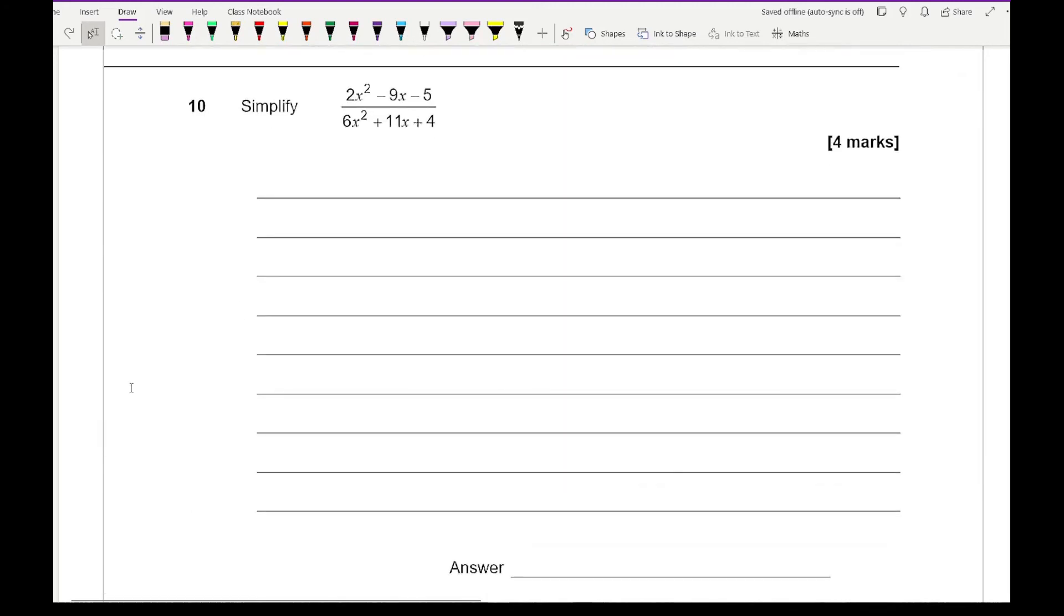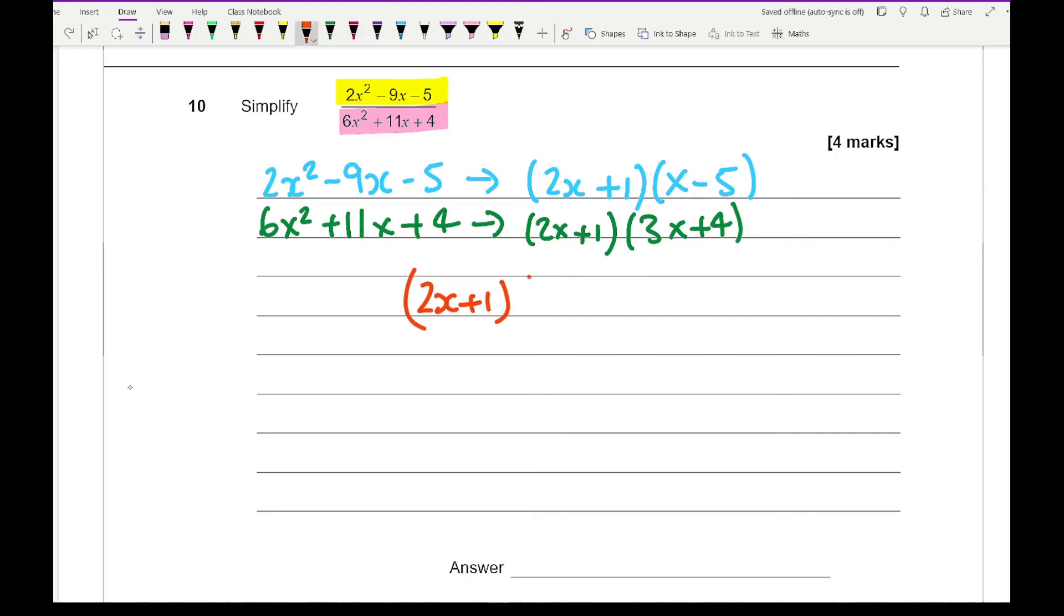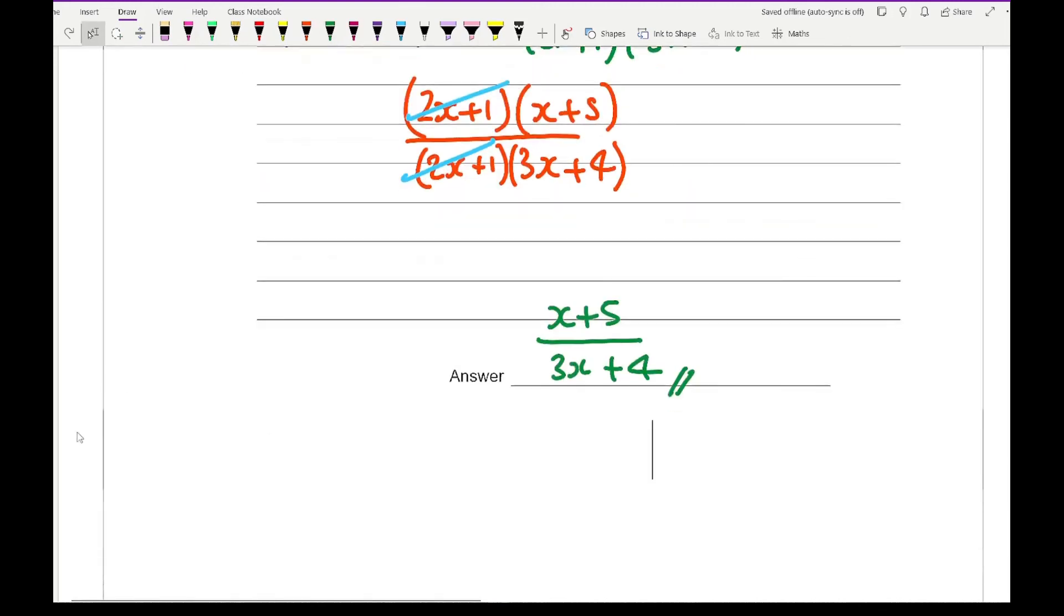Moving on to our last question, it says simplify this. You should be recognizing that this is a quadratic along with this. When it comes to simplifying, it means that they're basically going to factorize. I've got 2X squared minus 9X minus 5, which will factorize to give me 2X plus 1, X minus 5. If I then went on to factorize 6X squared plus 11X plus 4, that should factorize to give me 2X plus 1 and 3X plus 4 in any order. So I've got 2X plus 1 and X plus 5 over 2X plus 1, 3X plus 4. You should be able to spot that these two brackets cancel, leaving me with a final answer of X plus 5 over 3X plus 4.